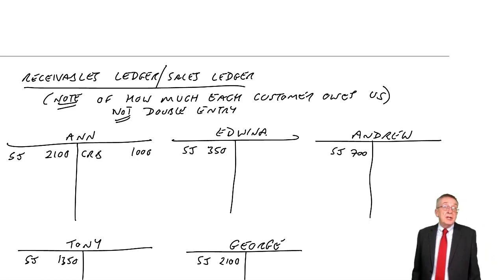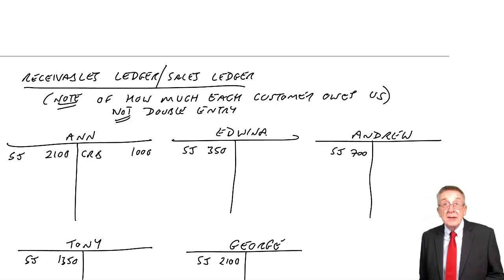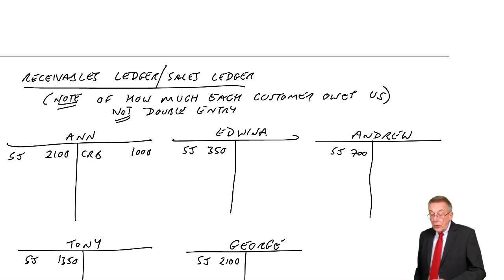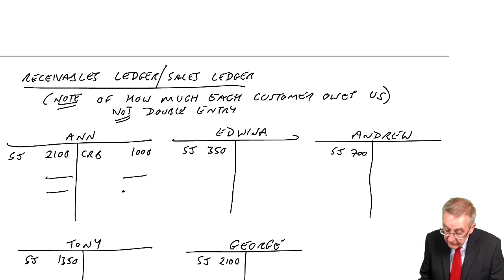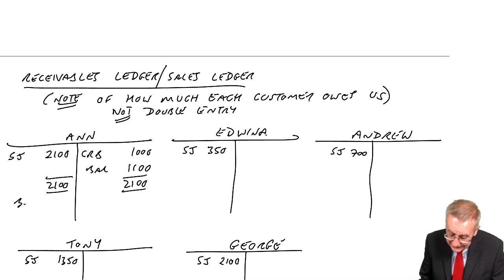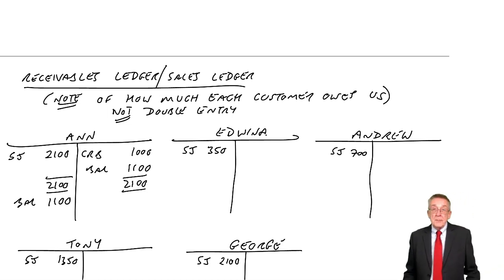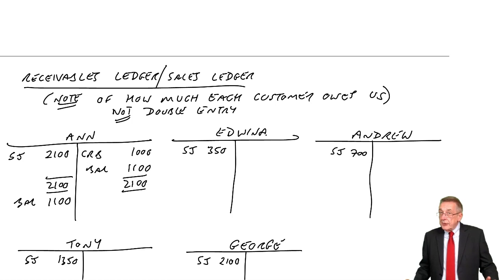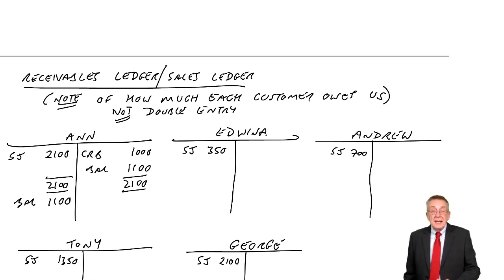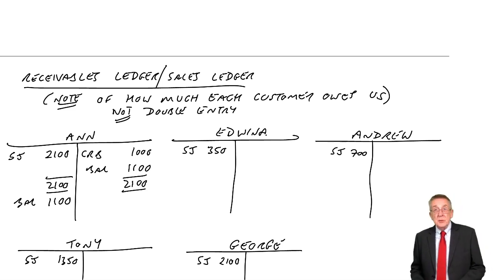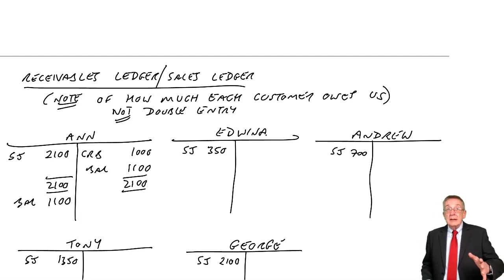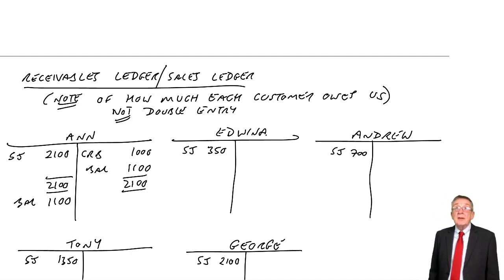At the end of the month, of course, we know how much each customer owes us — maybe we want to write them letters. There's no need to strike a balance for some; we know exactly what they owe. Anne, for example: the balance is £1,100. For about the tenth time — and I'm sorry, but it's so important — these are not real T-accounts. There's no double entry; they're simply a note. But hopefully it's clear why in real life we need that note, so that on any day if we need to check how much they owe us, we can find out instantly.